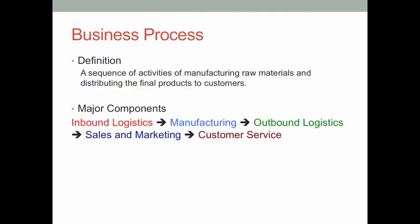A business process is a sequence of activities, starting from manufacturing to the day when you deliver the final products to the customers. A business process usually consists of five major components: inbound logistics, manufacturing, outbound logistics, sales and marketing, and customer service. Let me use an example to explain each component.